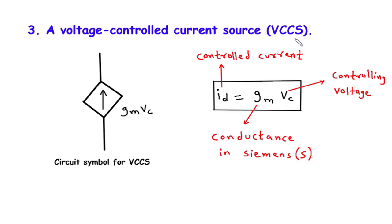To summarize, a voltage-controlled current source, VCCS, is an electronic component that produces a current proportional to the voltage applied to it. The current is controlled by adjusting the controlling voltage using the equation ID equals GM into VC, where GM represents the conductance in Siemens. This relationship allows us to modulate current flow in electronic circuits and find applications in amplifiers, signal processing, and control systems.